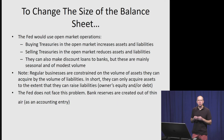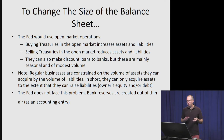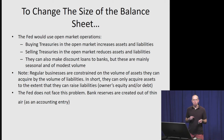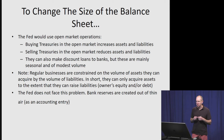If they wanted to change the size of the balance sheet, they would use ordinary open market operations. They would buy Treasury bills in the open market, which would tend to increase both assets and liabilities. If they sold Treasuries, that would have exactly the opposite effect, reducing both liabilities and assets.